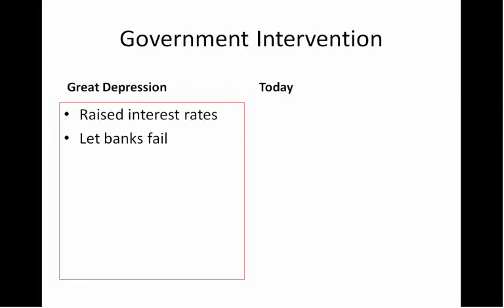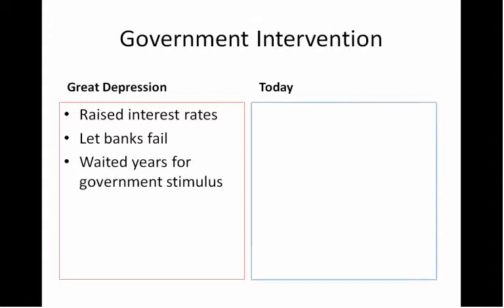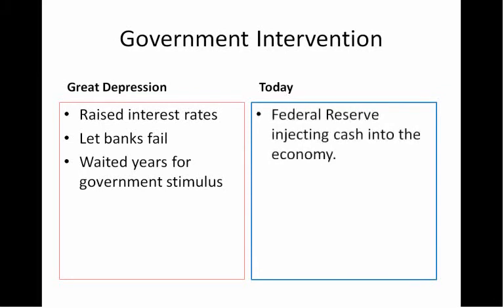I'm not saying that bank bailouts are a good thing, but letting the banks fail certainly caused some harm as well. And finally, the government also waited years for any sort of stimulus. FDR was the first one to really push for any sort of stimulus in his New Deal program, and that was several years after the Great Depression had already come underway. Today, on the other hand, things are very different. The government is far more activist. The Federal Reserve is injecting cash into the economy at a very rapid rate. They've slashed interest rates as much as possible, and they keep pumping money into the economy by buying up treasuries, which makes things cheaper for consumers.